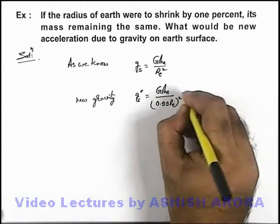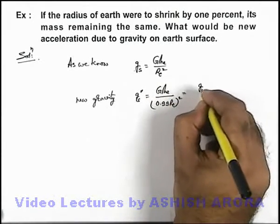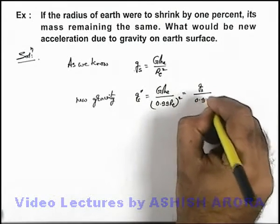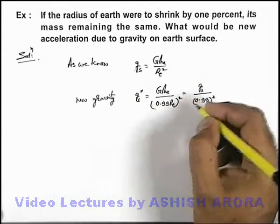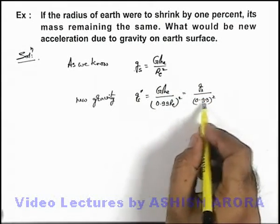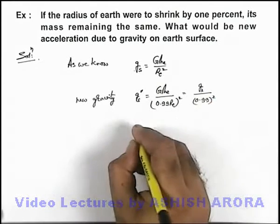Here it can be written as GMₑ/Rₑ² divided by (0.99)². We can replace GMₑ/Rₑ² by g, giving us g/(0.99)².